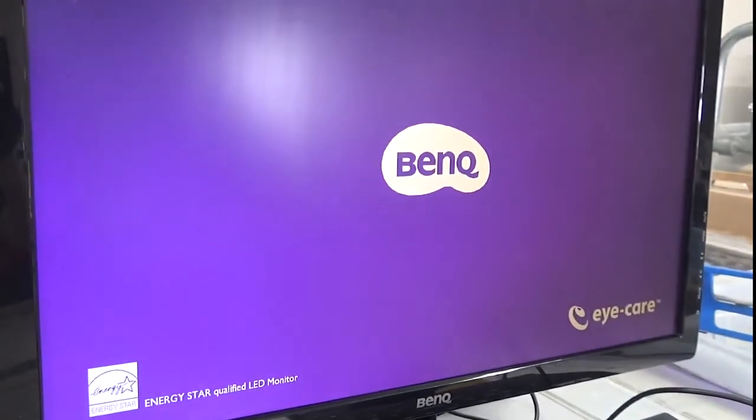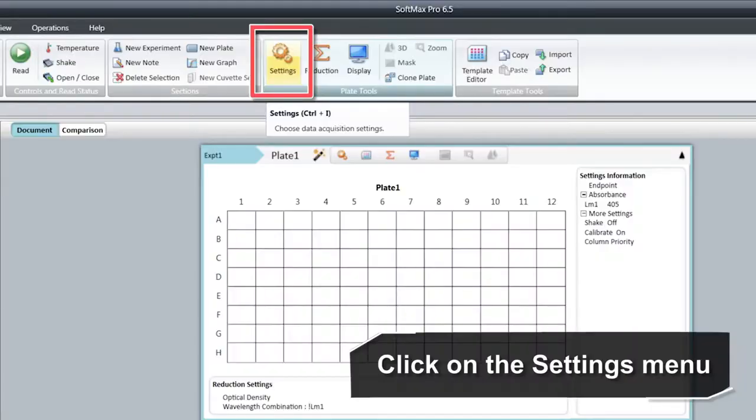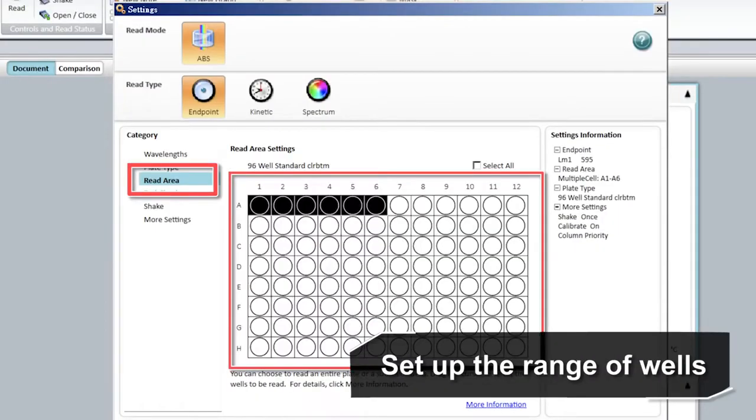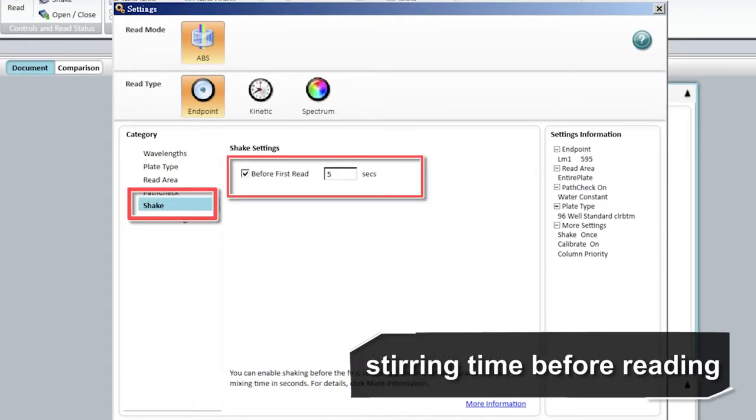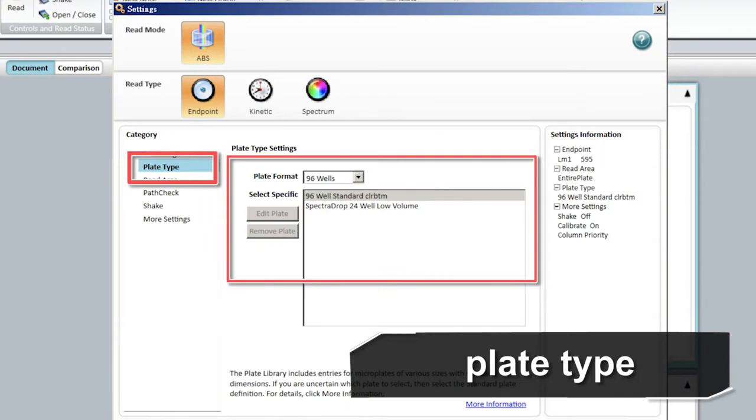Turn on the computer connecting to the spectrophotometer and start the control software. Click on the settings menu. Set up the wavelength, range of wells, starting time before reading, volume calibration, and other relevant parameters.